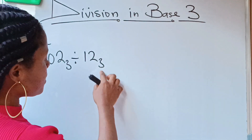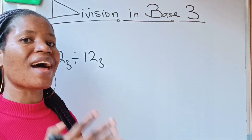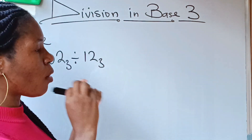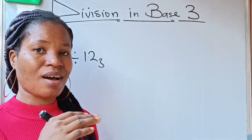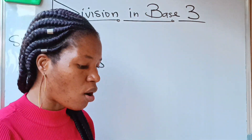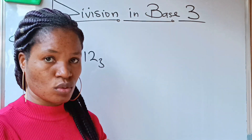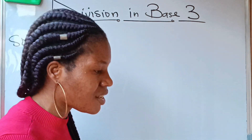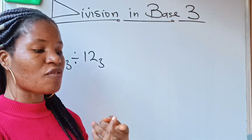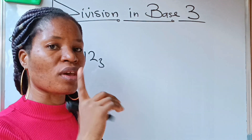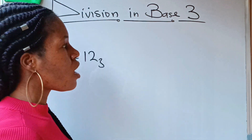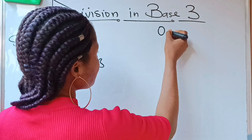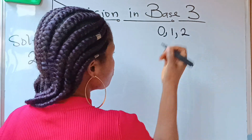First of all, this is base 3 — what are the numbers you are allowed to have in base 3? Once you have a number in base 3, the only figures you are allowed to have are 0, 1, and 2. You don't need anything from 3 upwards; it is not supposed to be in your answer.